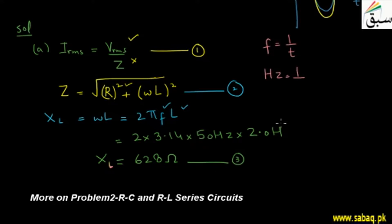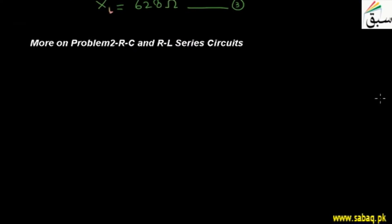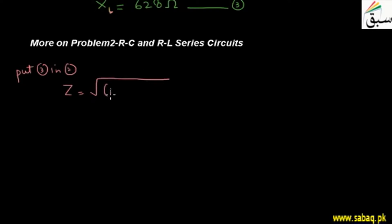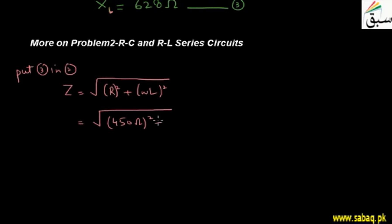Now let's put equation number 3 into equation number 2. Equation number 2 gives us Z equals the square root of R squared plus omega L squared. The value of resistance is 450 ohms, so it will be squared, and the value of omega L is 628 ohms, so it will also be squared.